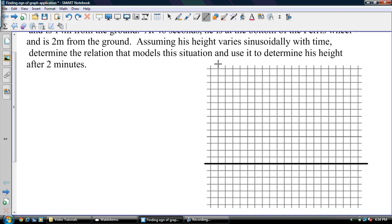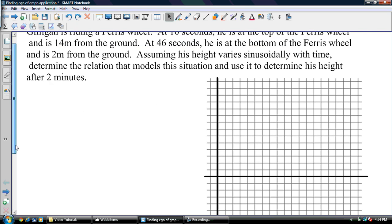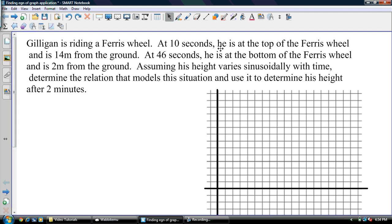So you have this situation. We draw our grid, and notice all your numbers are positive. Let me read the question. Gilligan is riding a Ferris wheel. At 10 seconds, he is at the top of the Ferris wheel and is 14 meters above the ground.